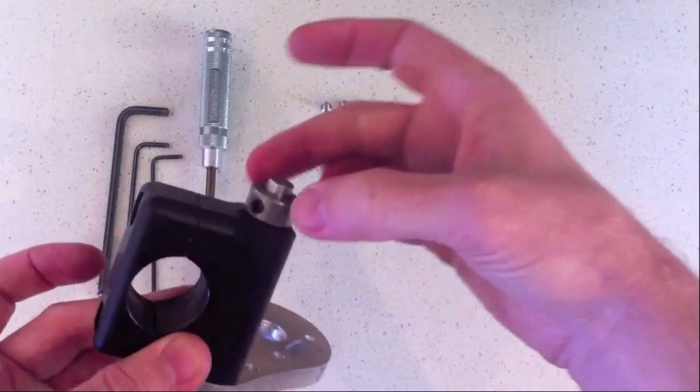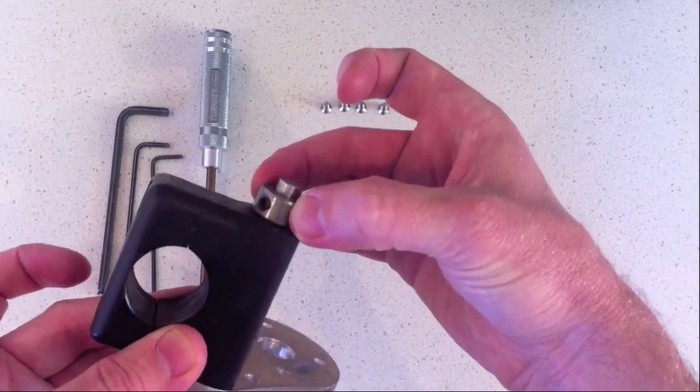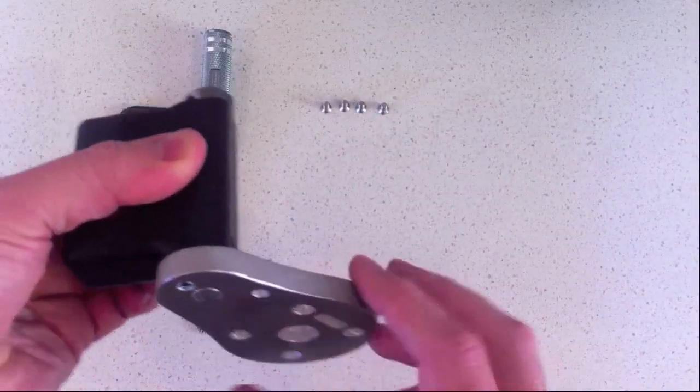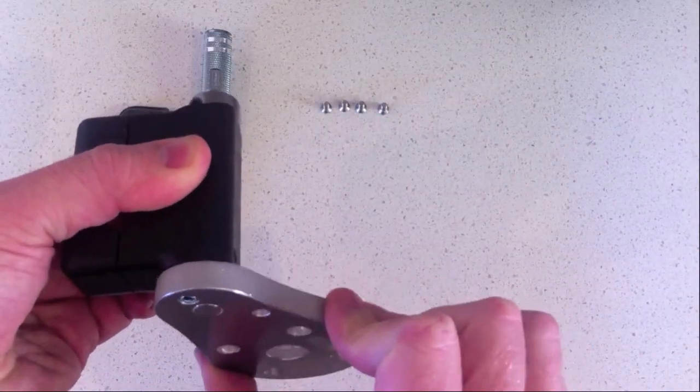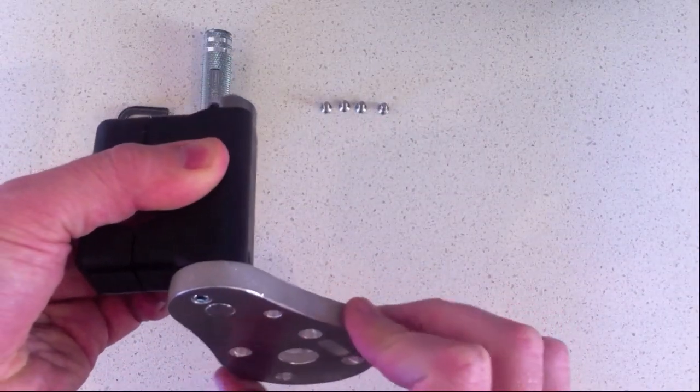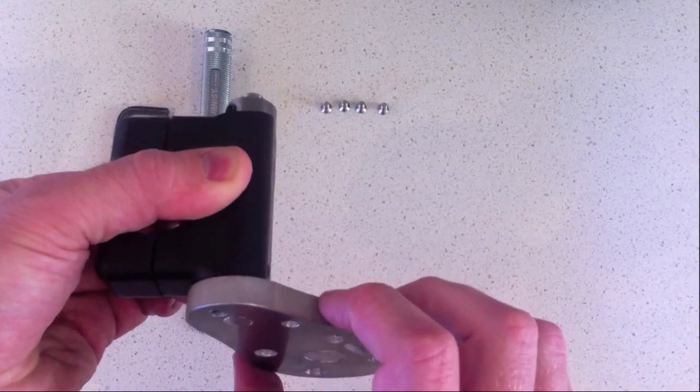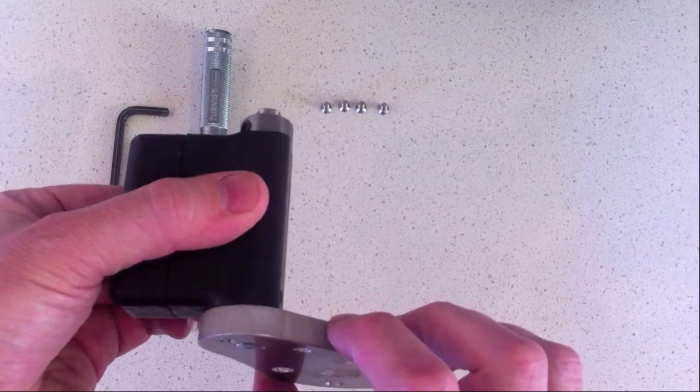One is this collar here. That adjusts when you rotate it relative to the shaft, how much spring tension there is on the swing arm. That allows you to adjust for the weight of the motor and counterbalance that. And I will describe that more in the installation video.